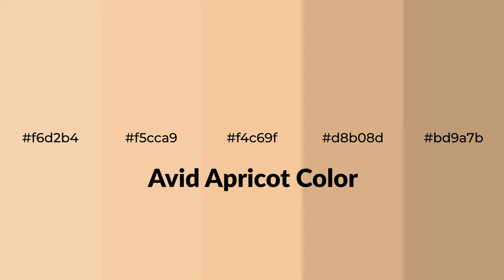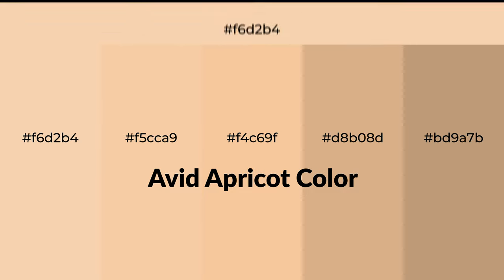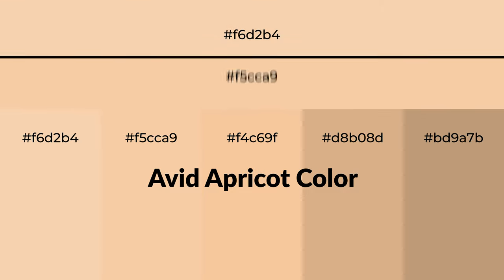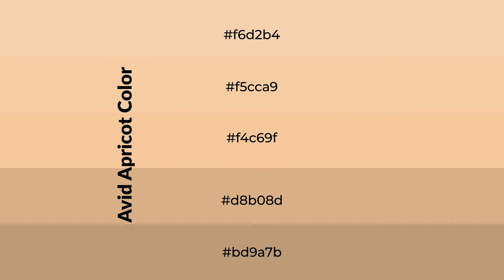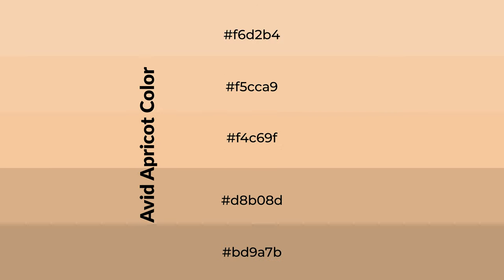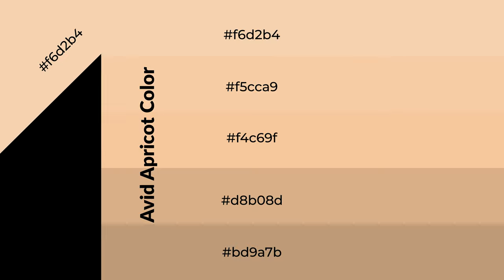Warm shades of avid apricot color with yellow hue for your next project. To generate tints of a color, we add white to the color. Tints create light and exquisite emotions. To generate shades of a color, we add black to the color. Shades are used in patterns, 3D effects, and layers, and they create depth and drama.